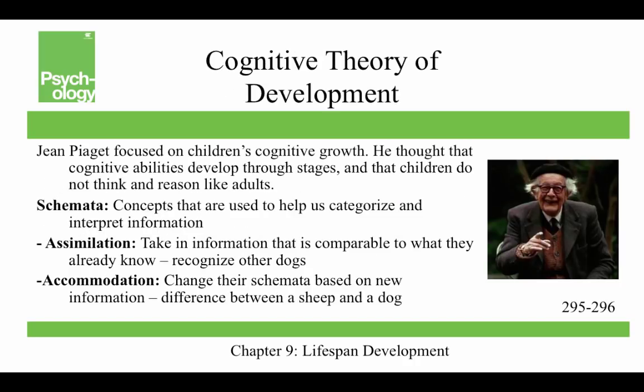Jean Piaget focused on children's cognitive growth. He thought cognitive abilities develop through stages and that children do not think and reason like adults, proposing a discontinuous approach. Prior to Piaget, researchers thought children were just small adults who thought like adults did. Piaget introduced the idea of schemata — concepts used to help categorize and interpret information — and that children develop these schemas to help them understand the world.